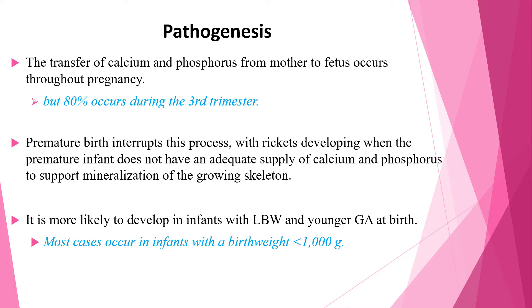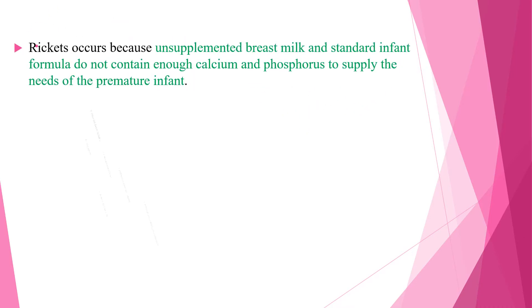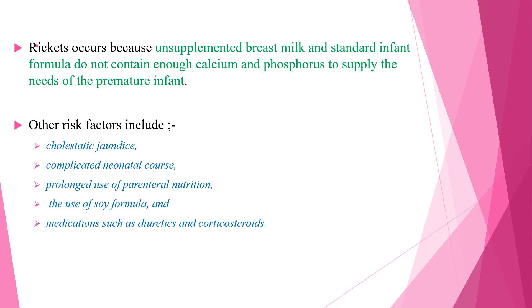Rickets occurs because unsupplemented breast milk and standard infant formula do not contain enough calcium and phosphorus to supply the needs of the premature infant. Other risk factors include cholestatic jaundice, a complicated neonatal course, prolonged use of parenteral nutrition, and the use of soy formula and medications such as diuretics and corticosteroids.